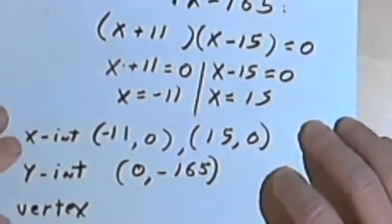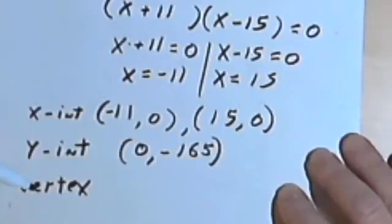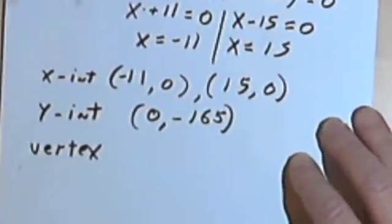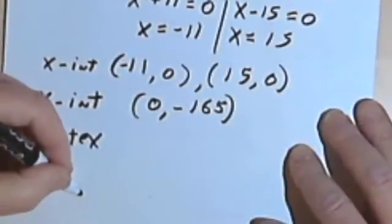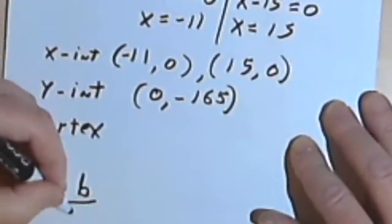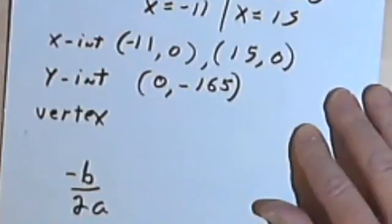Now I also want to know what the vertex is, because that's a significant part of the graph also. So I can use the vertex formula to find that. Remember the vertex, the formula for that is negative b over 2a.